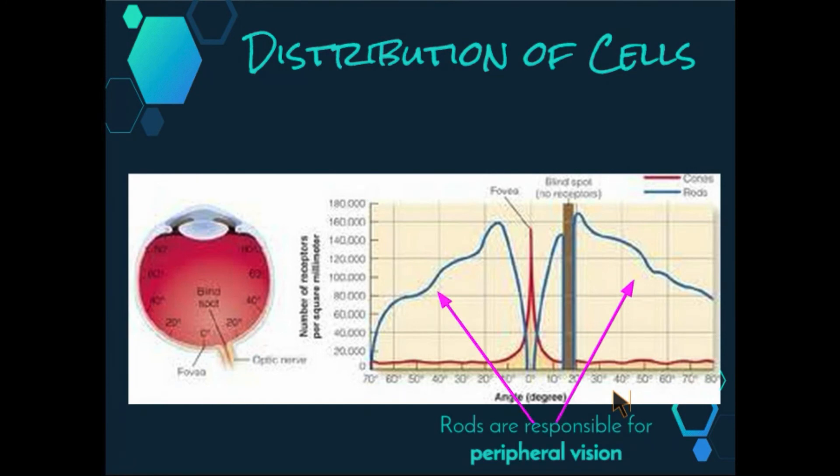Rods are not very tightly packed in the retina, and many rods may connect with one bipolar neuron. This retinal convergence results in the rods having poor visual acuity, so our rods don't actually allow us to see very clearly. Rods are extremely sensitive to light, responding best to low light intensities.